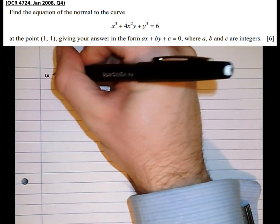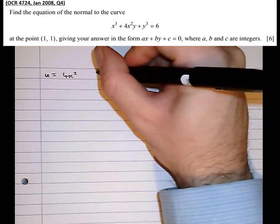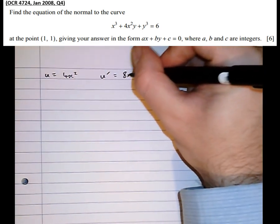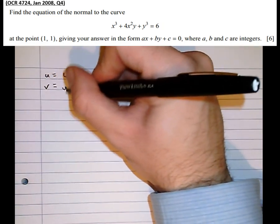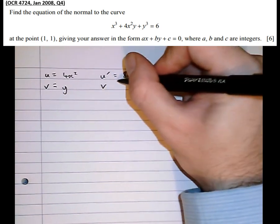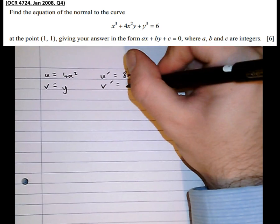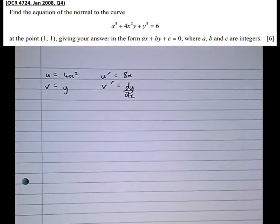So the first term in the product is 4x², which means that the differential of u, u dash, is 8x. v equals y, which means that v dash equals, where we differentiate y, we get 1, then multiply that by dy/dx because we've just differentiated the y to get that.